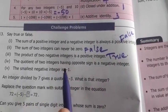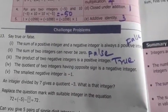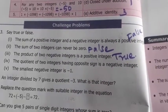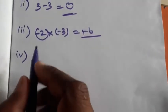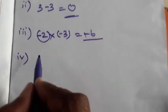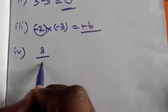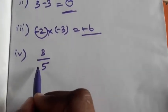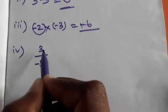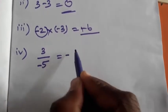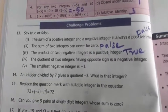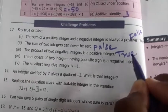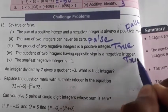Fourth one: the quotient of two integers having opposite signs is a negative integer. Taking numbers three and five — three divided by negative five — the numerator is positive, the denominator is negative, so opposite signs give a negative result. Therefore the given statement is true.